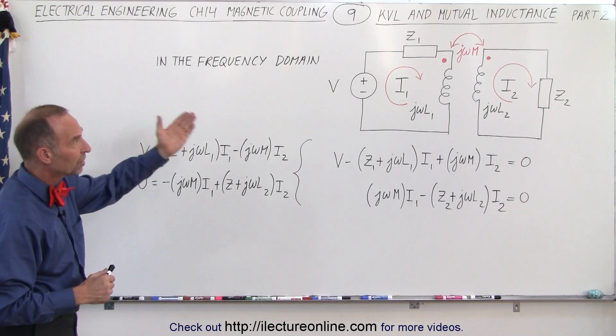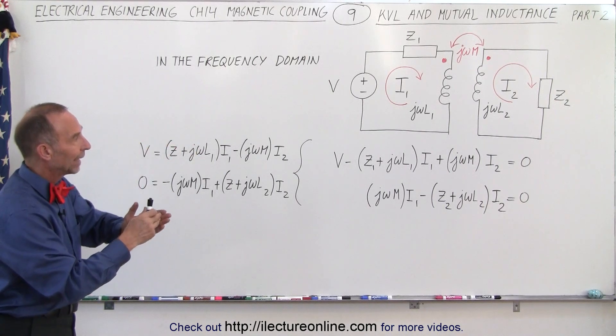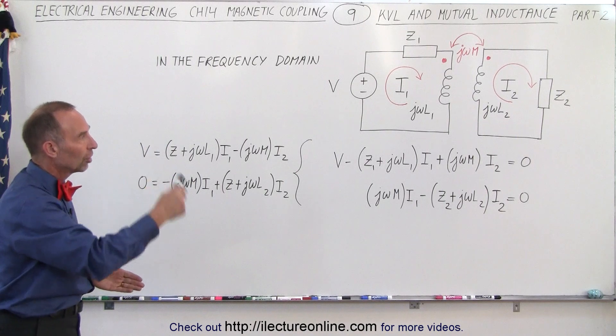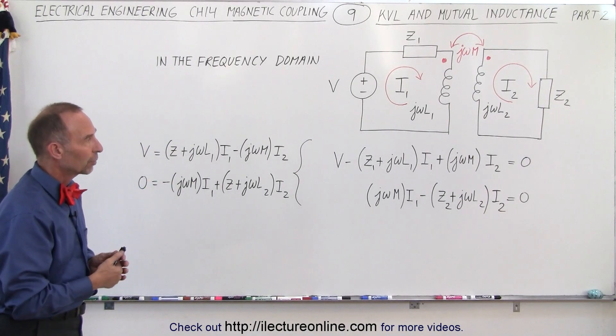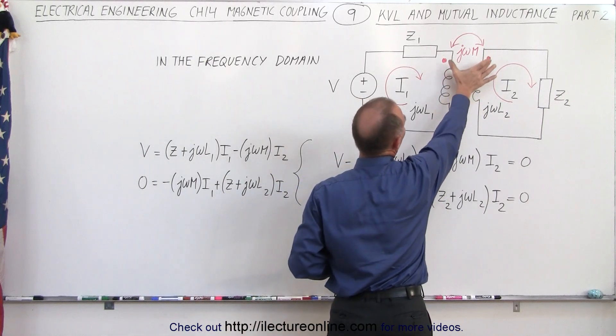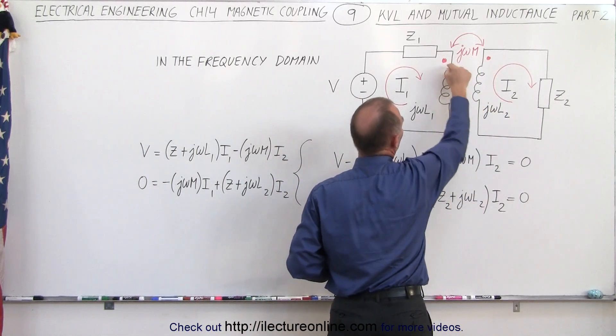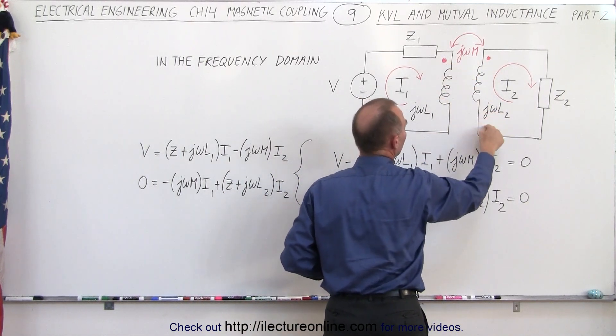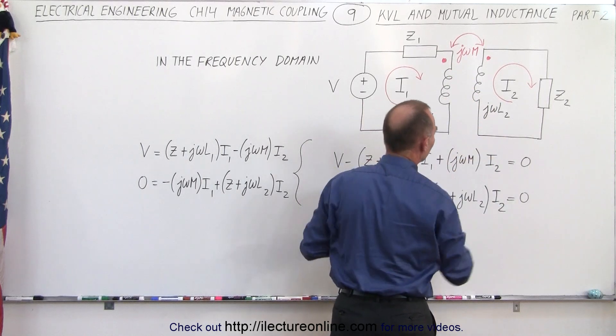So you can see that this is how you deal with mutual inductance and summing up all the voltages across the circuit, across the components of the circuit. Notice then, if these are in opposite directions, I have a dot here and a dot there, so if they're oppositely coupled, then, of course, this would become a negative...